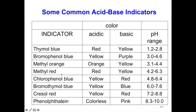Next is methyl red. It shows red in acidic and yellow in basic. The pH range is 4.8 to 6.4.